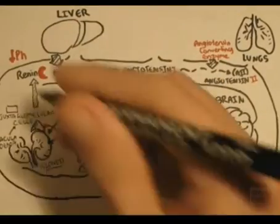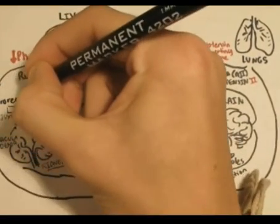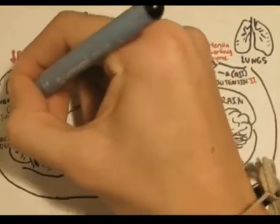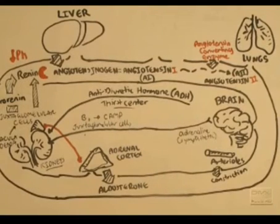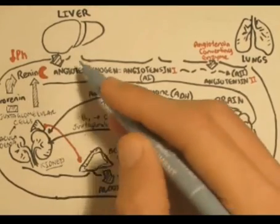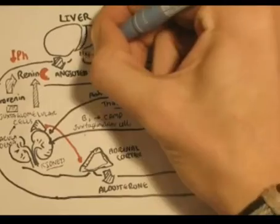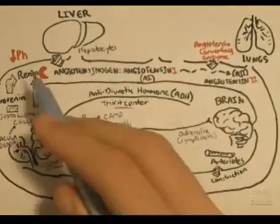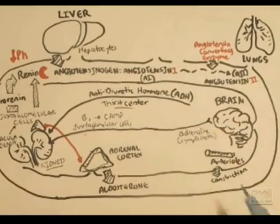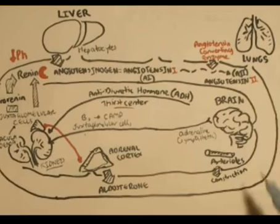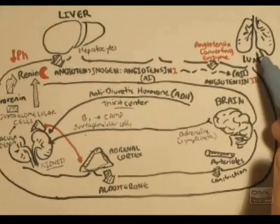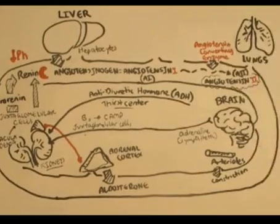The juxtaglomerular cells do not only secrete renin — they also sometimes secrete pro-renin, an inactive form, which is easily converted into renin before entering the bloodstream. Renin travels in the vessels and comes into contact with angiotensinogen, which is secreted by the hepatocytes of the liver. Renin is an enzyme and converts the inactive angiotensinogen into angiotensin 1. Angiotensin 1 then travels to the areola of the lungs where ACE converts it into angiotensin 2.